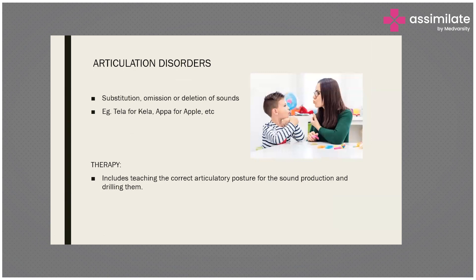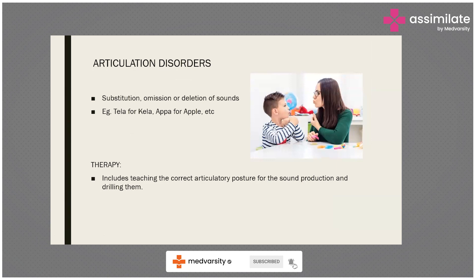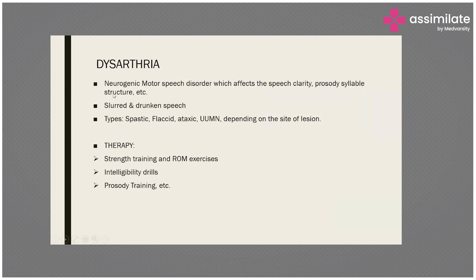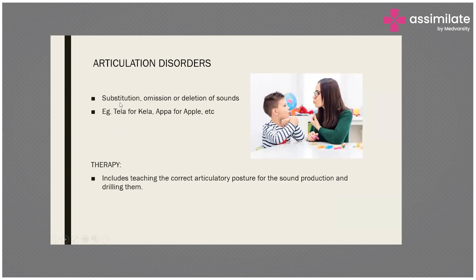Coming to Articulation Disorders. Articulation disorders are when a child or individual doesn't speak clearly — they may say 'tela' for 'kela' or 'appa' for 'apple,' where certain sounds are substituted for different sounds. It can happen in adults and in kids. When it happens with kids, it's usually developmental; when it happens with adults, we usually call it dysarthria. The therapy includes teaching the correct articulatory posture of the sound to the child and drilling them.